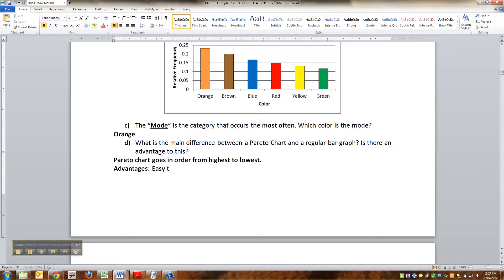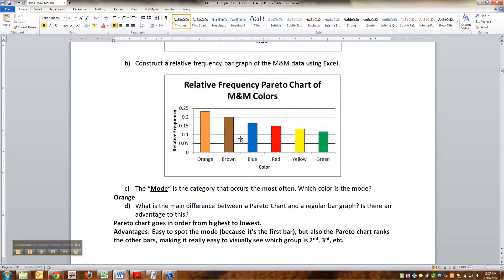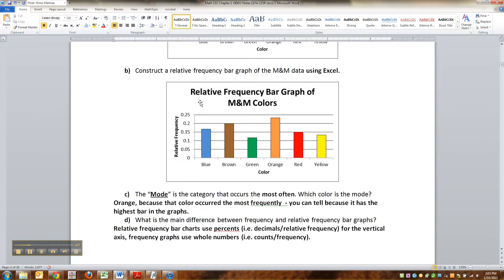Easy to spot the mode, obviously, because it's the first bar. But also, the Pareto chart ranks the other bars, making it really easy to visually see which group is second, third, etc.